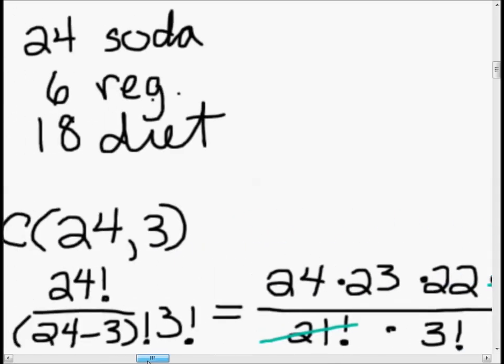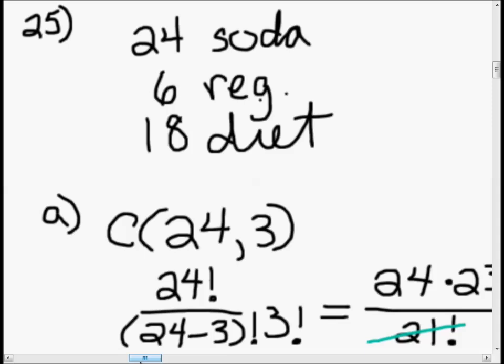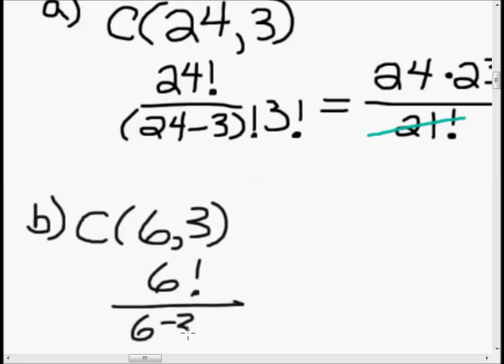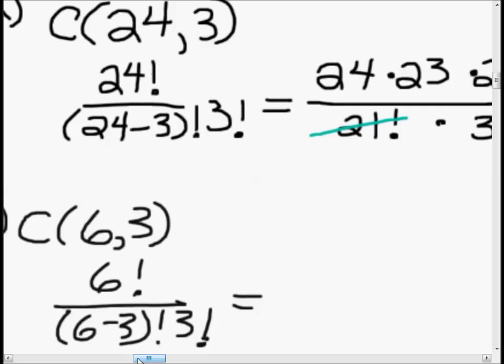That's our answer for part A. Let's go to part B. We want to choose just three regular colas. This is really familiar. We want the combination from six total regular colas and we're going to choose three. Six factorial over six minus three factorial, three factorial. I'm going to jump over that first canceling step because we know things are going to cancel. Six times five times four. Here's my trick: these are the first three things, one, two, three.